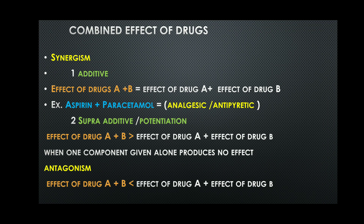The next terminology is the combined effect of drugs. When two or more drugs are combined, two things can happen: synergism and antagonism. In synergism, there are two subtypes — additive and super-additive. In the additive type, the combined effect equals the sum of individual effects: Effect(A+B) = Effect(A) + Effect(B). An example is aspirin and paracetamol combined for analgesic and antipyretic effect.